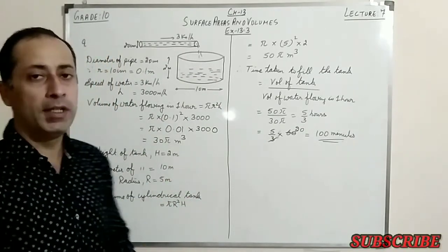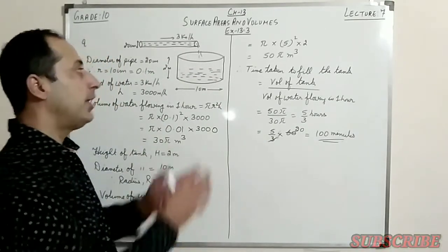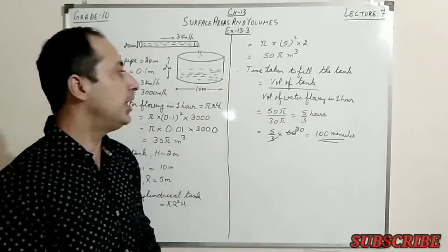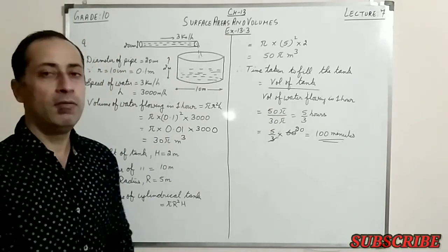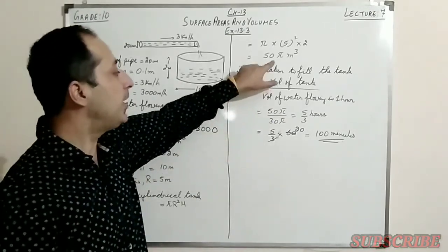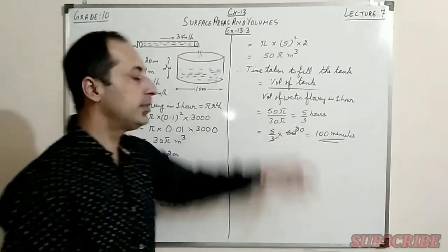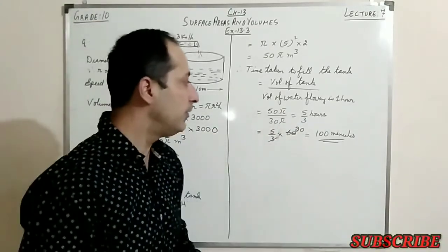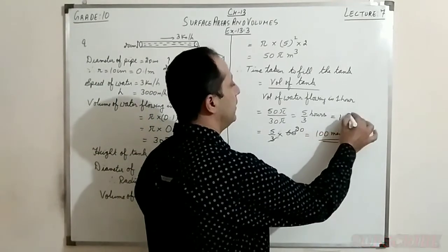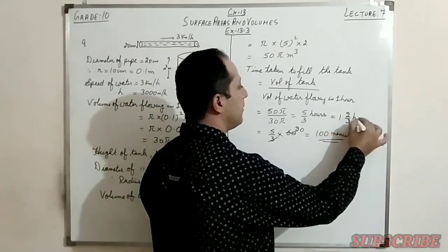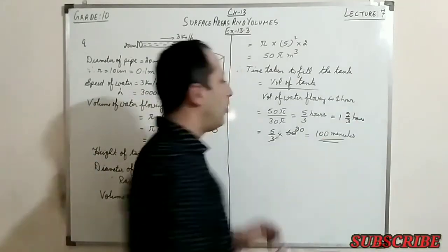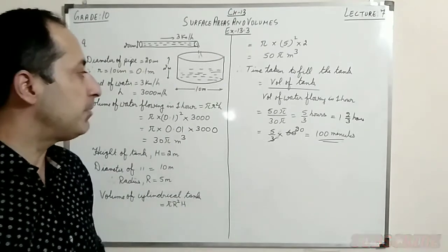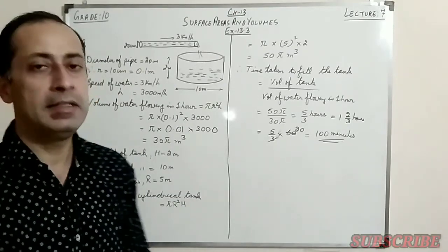Time to fill the tank = volume of tank ÷ volume of water flowing in 1 hour = 50π ÷ 30π = 5/3 hours = 1 and 2/3 hours. Converting to minutes by multiplying by 60, we get 100 minutes.